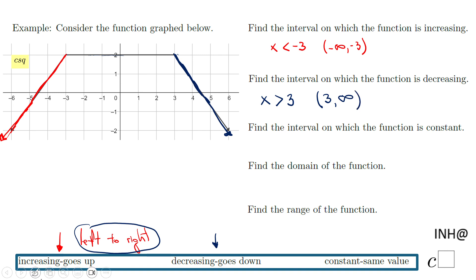Let's go to the next one, which asks when the function is constant. Constant means the same value. If you take a look, this is the moment from this point to this point when the function stays the same. From negative 3 to 3, the function stays at a y value of 2.